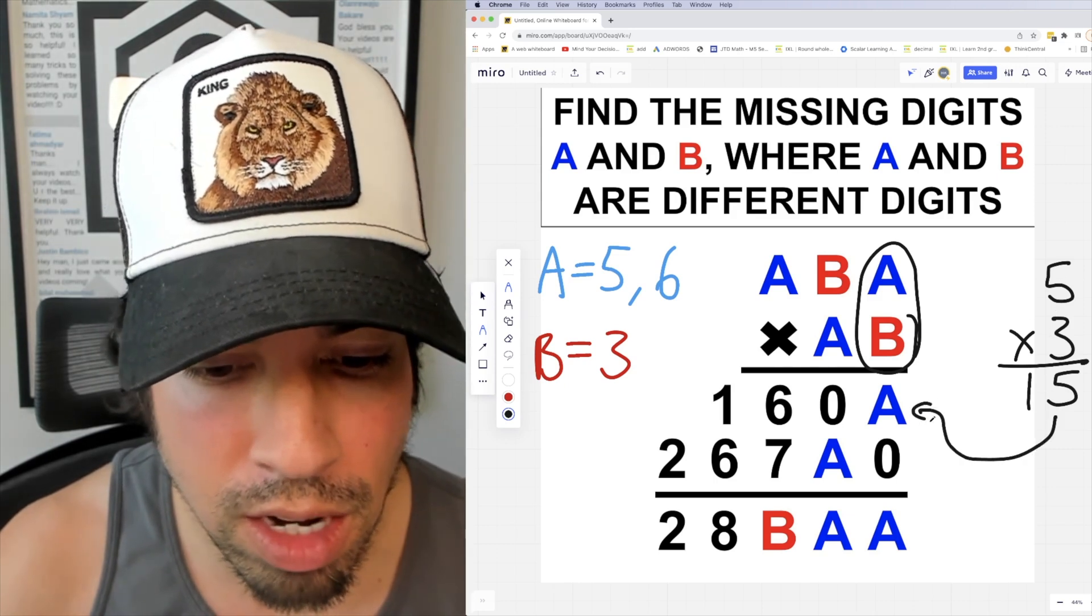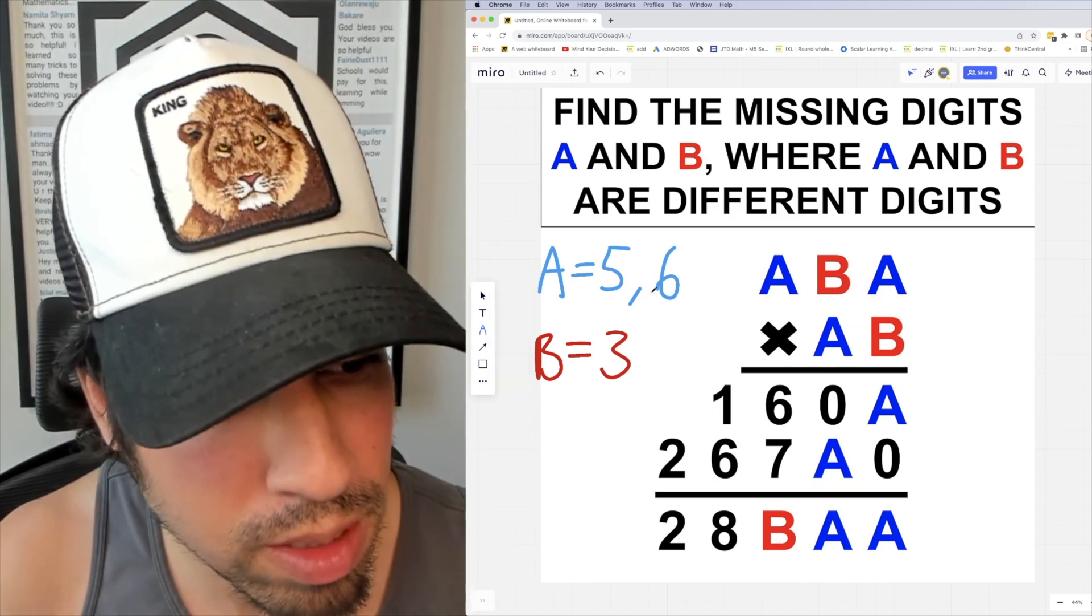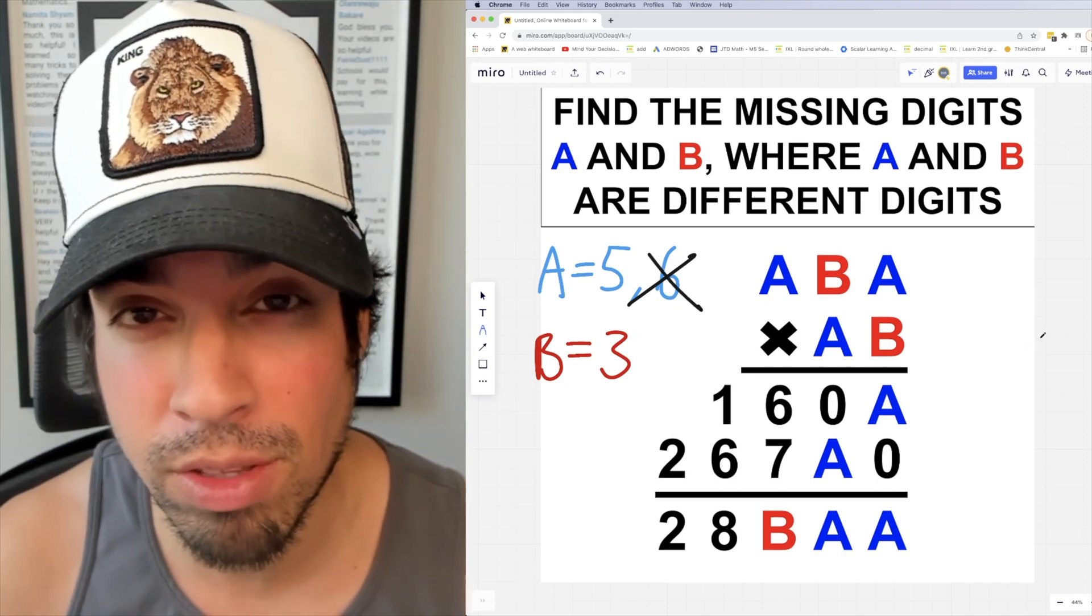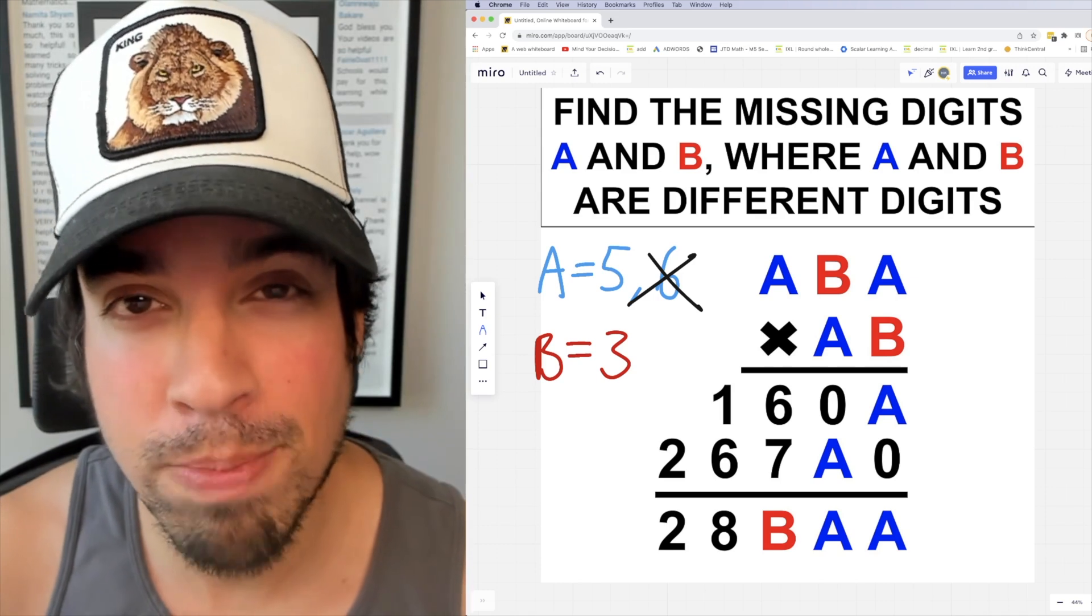This therefore means that A cannot be six. It has to be five. So there's your solution: A is five, B is three. Boom, done!